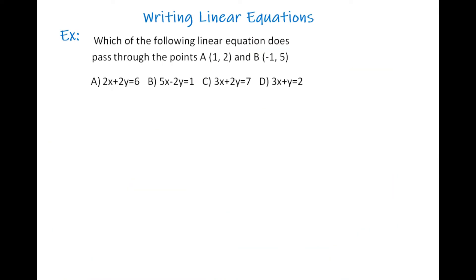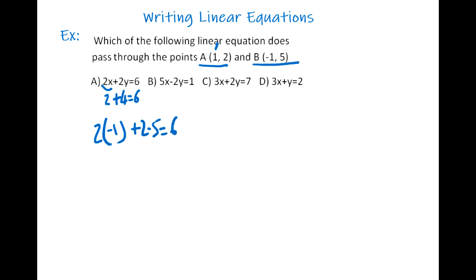This is another type of question you may encounter: which of the following linear equations passes through the points A and B? In such questions, whatever the equation is, it has to satisfy both points. If you plug 1 into x, you should get 2 for y; and if you plug negative 1 into x, you should get 5 for y. Let's try option A: putting x equals 1 gives 2, and with y equals 2, we get 2 times 2 equals 4, so 1 plus 4 makes 5, not 6 — wait, it does make 6, so A is satisfied for point A. But checking point B: 2 times negative 1 plus 2 times 5 gives negative 2 plus 10 equals 8, not 6. So this is not the answer.